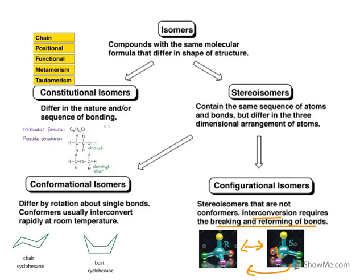That is the basic difference between configurational and conformational. Keep this in mind: isomers are either constitutional isomers or stereoisomers. In stereoisomers you have conformational — where easy interconversion is possible with a simple rotation — and configurational — where you need to break bonds to get the other isomer.